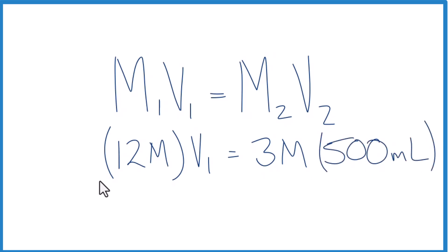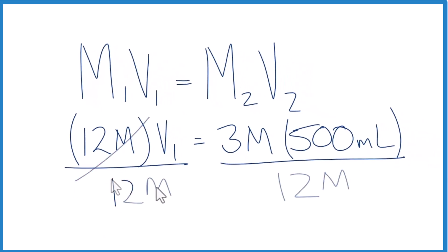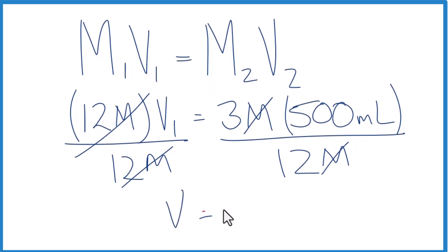So we divide both sides by 12 molar here to get V1 by itself. Those cancel out. We have molars here and here. Cancel that out. So three times 500 divided by 12. V1 equals 125 milliliters. Our units are milliliters since that's all that's left here.